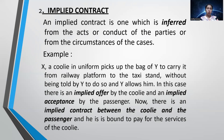Another example: a coolie in uniform picks up the bag of Y to carry it from the railway platform to the taxi stand without being told to do so by Y. Y allows him — that is an implied offer by the coolie and implied acceptance by the passenger. There is now an implied contract between the coolie and the passenger, and the passenger is obliged to pay the coolie. Whenever we arrive at a railway station, coolies approach us and carry our luggage to the taxi — we must pay for that service.